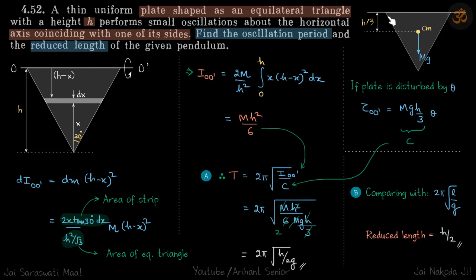We have this equilateral plate and we simply need to find what is the time period if it is hung about this as axis, one of the sides as axis, and then we need to find what is the reduced length of this pendulum.